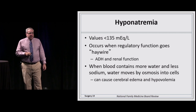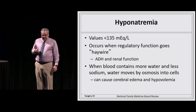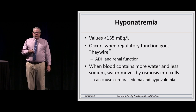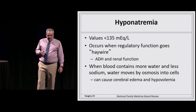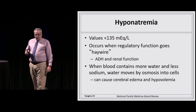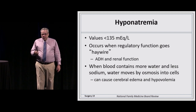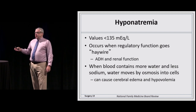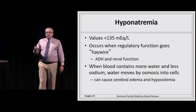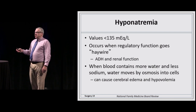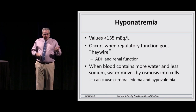Hyponatremia occurs with serum sodium below 135, usually from abnormalities in antidiuretic hormone and renal function. When blood contains more water and less sodium, osmosis causes water to move into cells, making them swell. Swelling cells in the brain cause cerebral edema. As water moves into cells it leaves the plasma, resulting in both cerebral edema and hypovolemia — both of which we want to avoid.